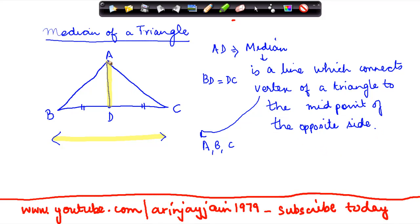So what does the point AD do? What does the line AD do? D is the midpoint of B and C and point A joins this D to form AD. Similarly, there can be other medians of this triangle as well.